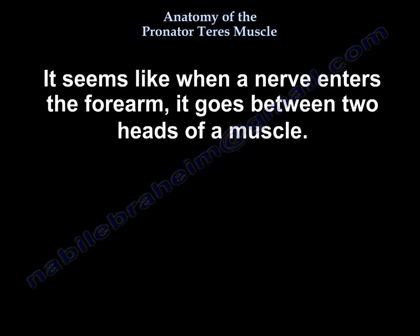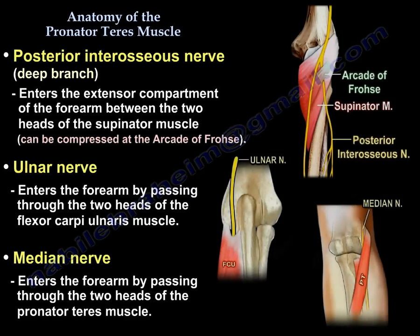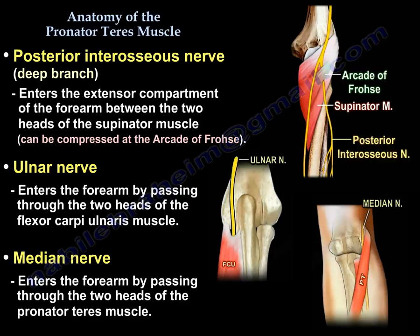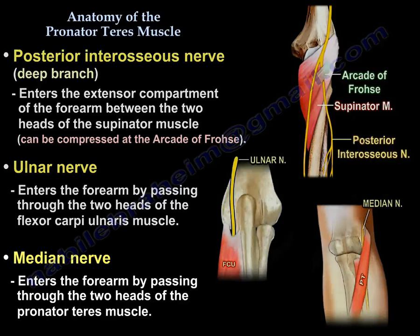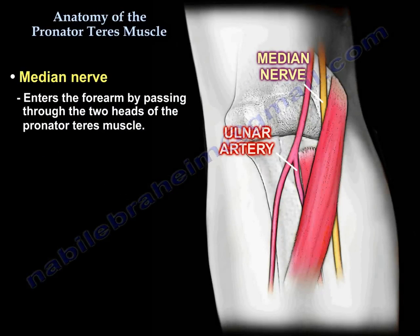It seems that when a nerve enters the forearm, it goes between two heads of a muscle. The posterior interosseous nerve, the deep branch, enters the extensor compartment of the forearm between the two heads of the supinator muscle. The posterior interosseous nerve can be compressed at the arcade of Frohse. The ulnar nerve enters the forearm by passing through the two heads of the flexor carpi ulnaris muscle, and the median nerve enters the forearm by passing through the two heads of the pronator teres muscle.